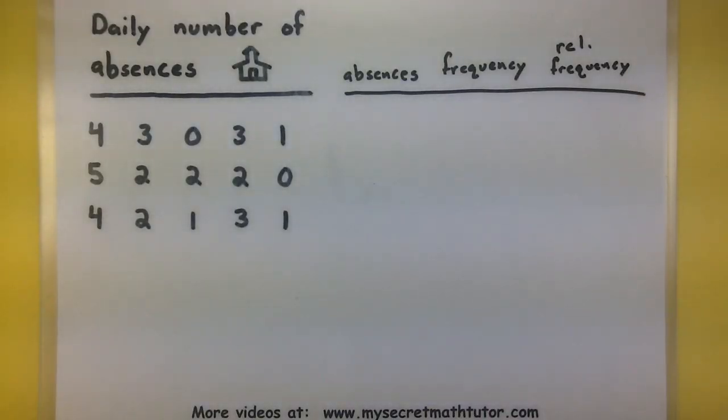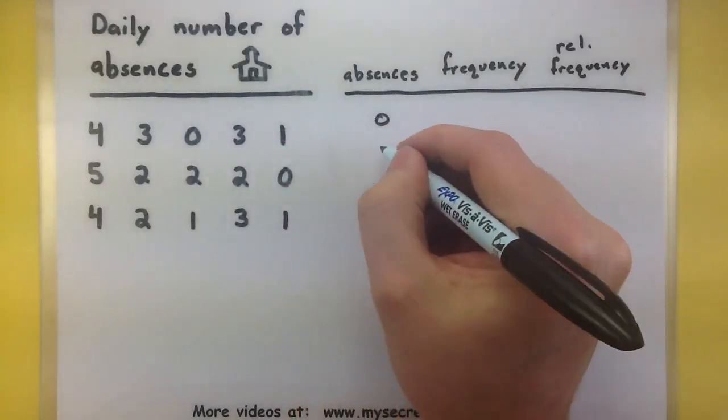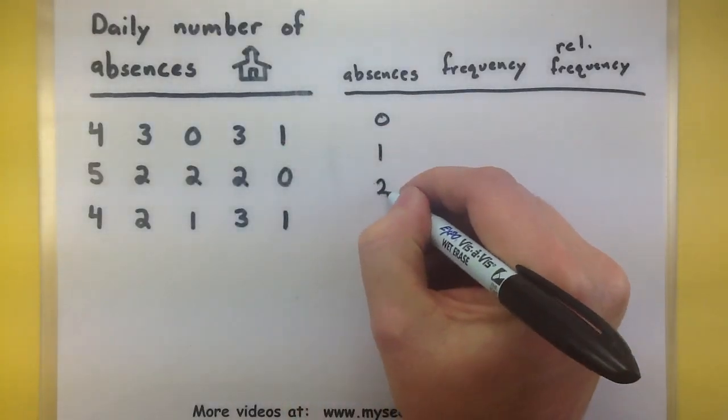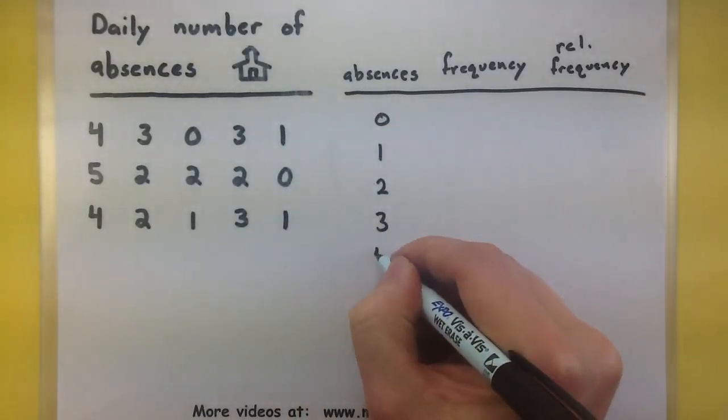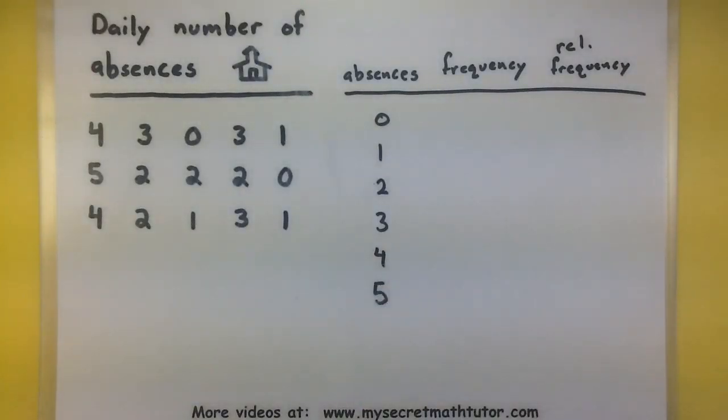All right, let's see what data values we have. Looks like I have 0, 1, 2, 3, 4, and 5. All right, that looks pretty good so far.